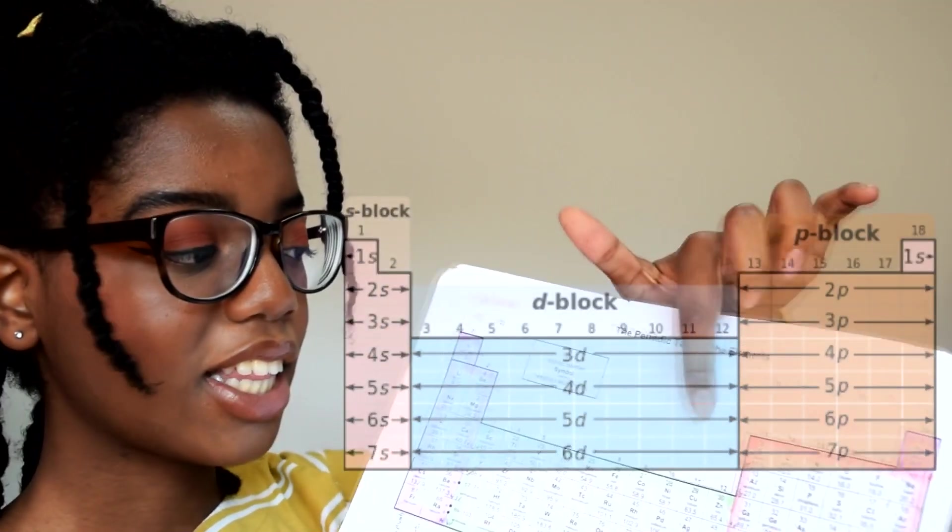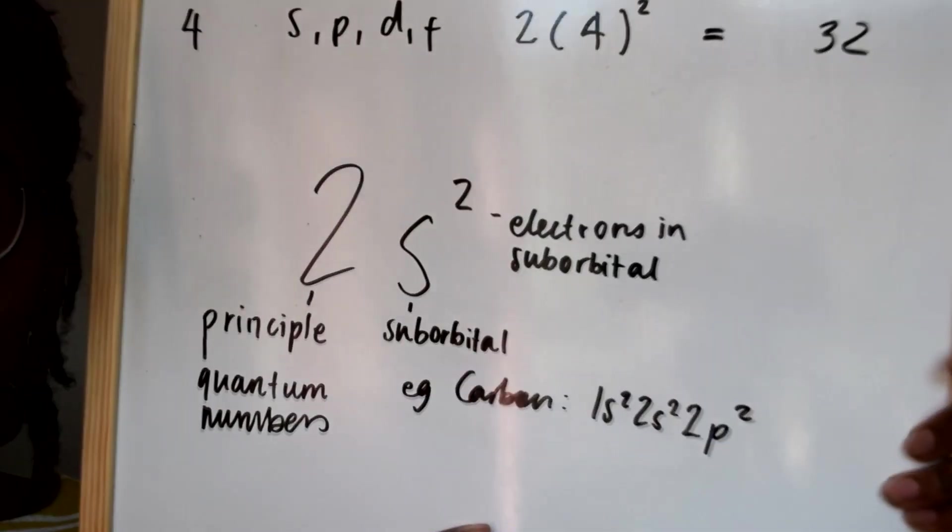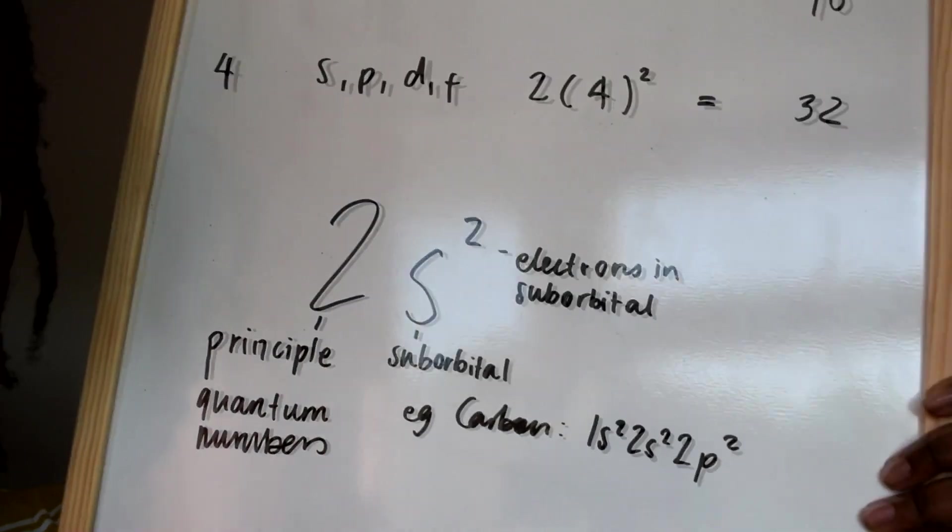You would just go through the periodic table until you get to carbon. This is the second period and this is the second element in the P block, so it would just be written like this with that notation. Another example: